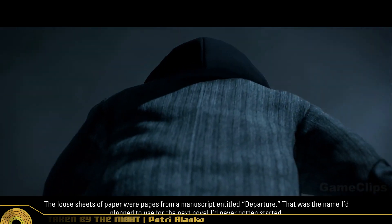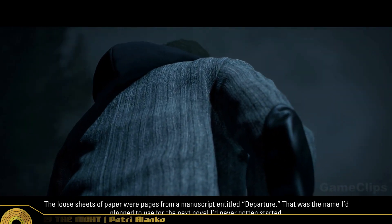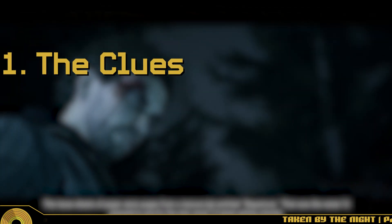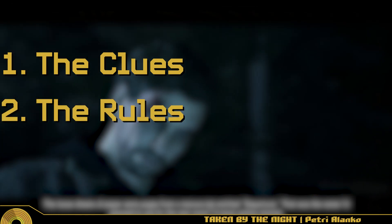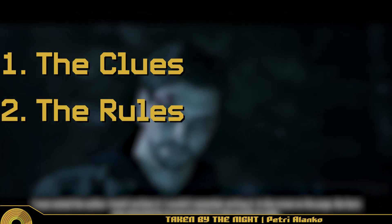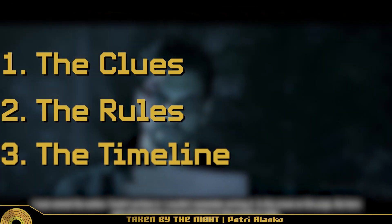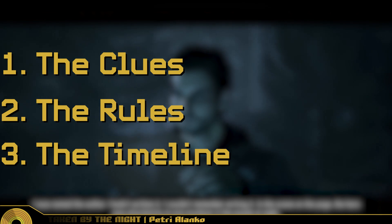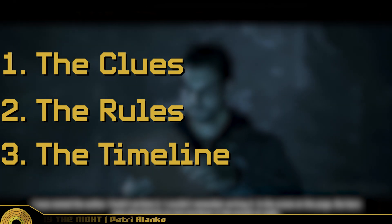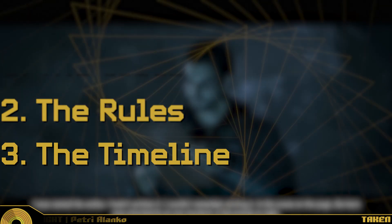I'll be splitting this video into three parts: analyzing the different clues the Alan Wake franchise has shown, then laying out the rules of how both characters operate, before finally creating a timeline for my theory that tries to link together as many of these plot points as possible.